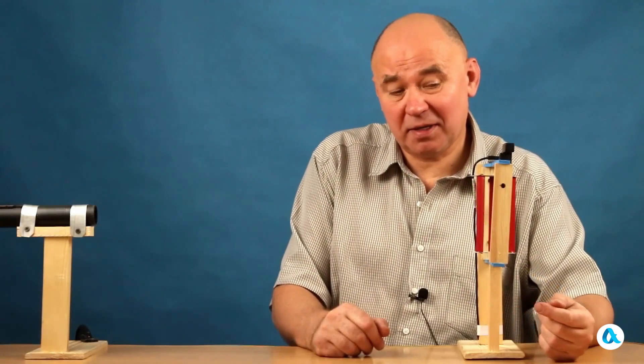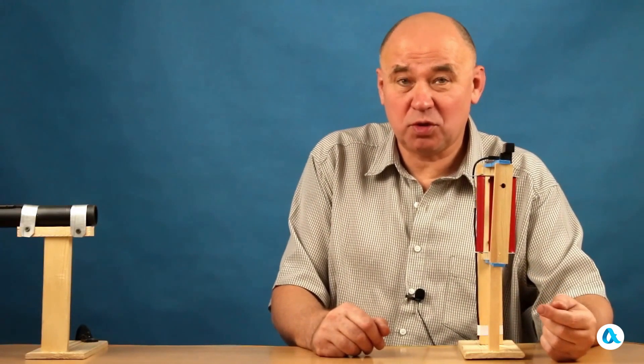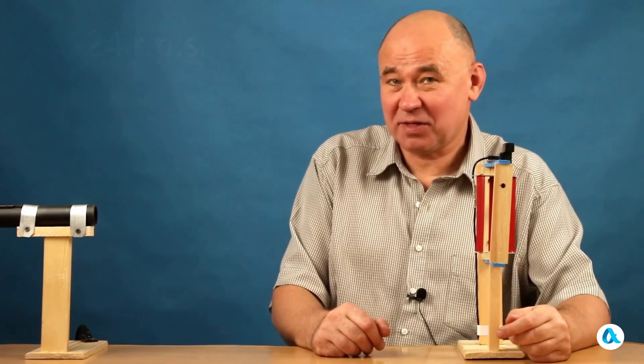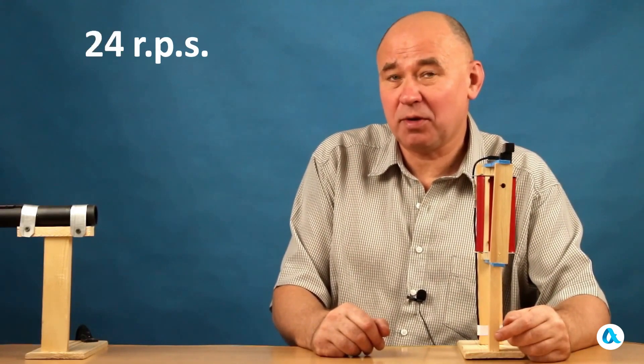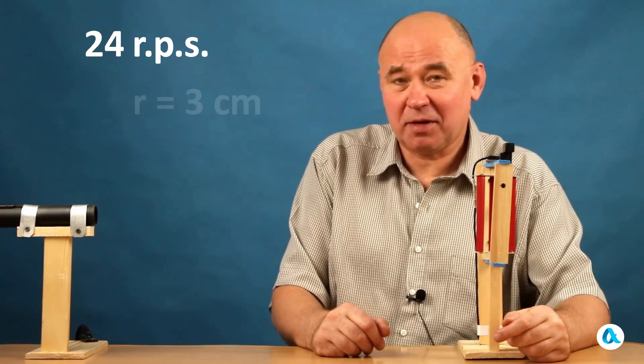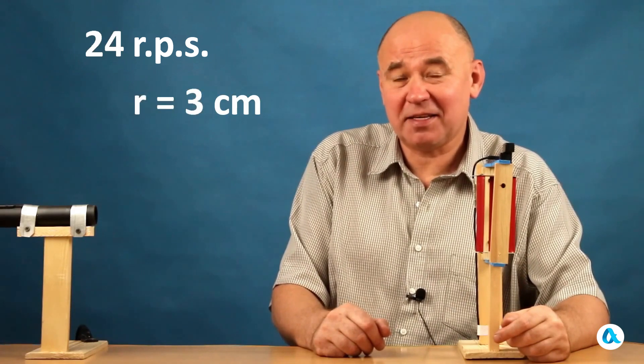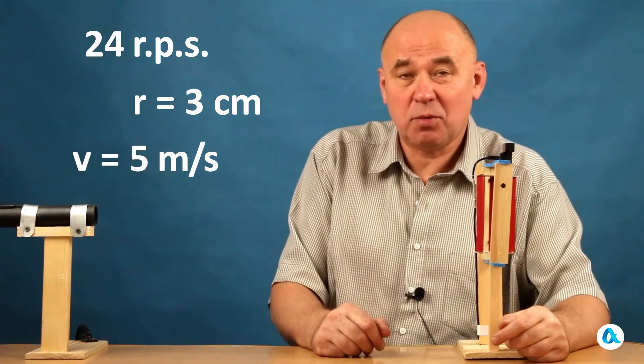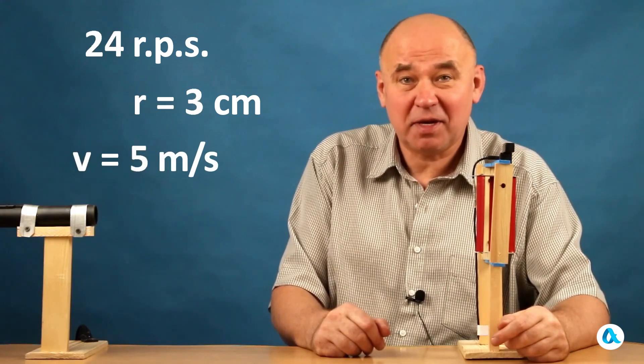Now, let us determine the exact linear speed of the rotor blades in auto-rotation mode. The rotor was rotating at a frequency of 24 revolutions per second. The distance from the blades to the axis is 3 centimeters. Well, we take 2πr, multiply it by the frequency, and get a linear speed of 5 meters per second.